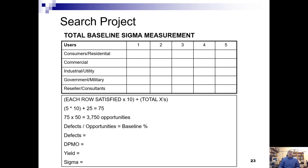The defects are divided over the opportunities to come up with the baseline percent. We are then able to calculate the number of defects, the defects per million opportunities, the yield, and the sigma value.